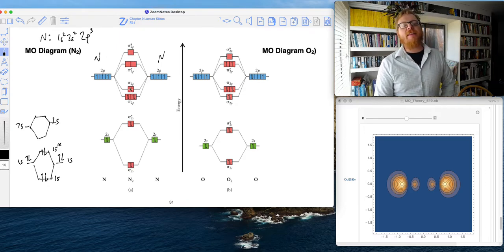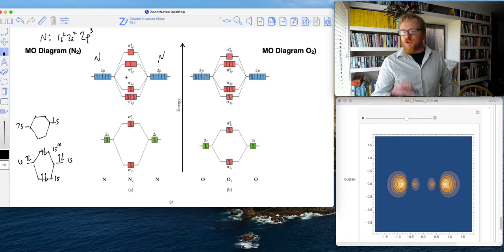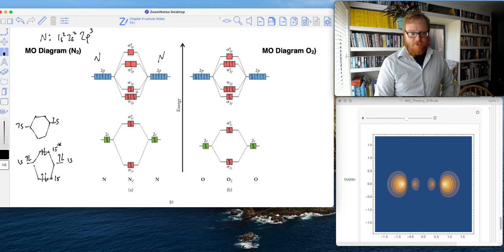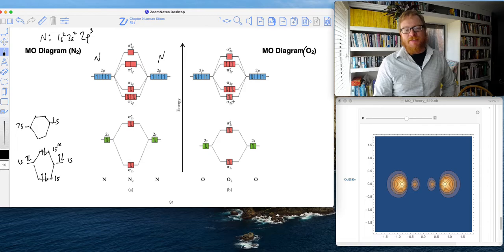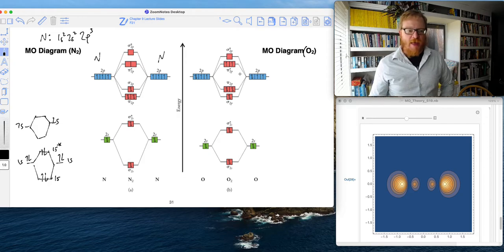And getting these in the right order is a little tricky, like why is the pi lower than the sigma? And now if you notice with oxygen, it flips—the sigma is now lower than the pi. I'm not going to hold you responsible for that information for this class, that would be a little bit more of an advanced topic.